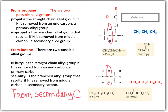Alkanes with three carbons or more can form more than one alkyl group. The name of the alkyl group depends on what type of carbon the hydrogen is removed from. Propane can lose a hydrogen from a primary carbon, and when that happens we will have propyl. If the hydrogen that is removed is from a secondary carbon, then we are forming the alkyl group named isopropyl.